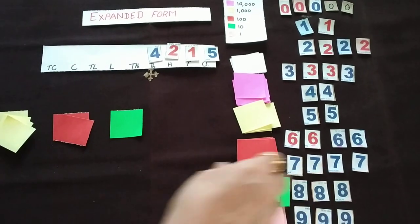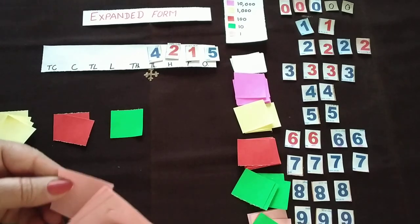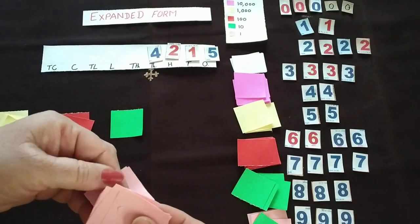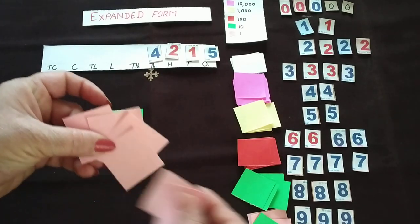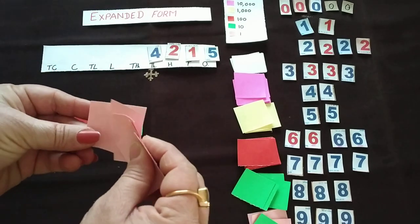And the next will be 5 ones. So ones means pink color. So pink color 5 sheets: 1, 2, 3, 4, and 5.